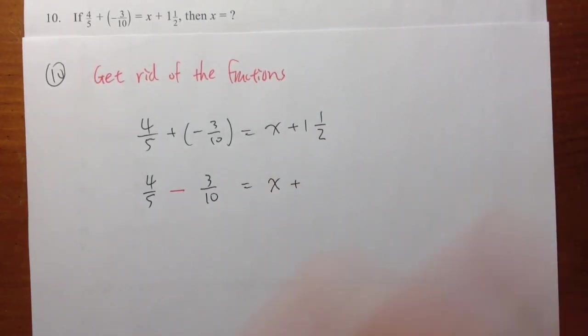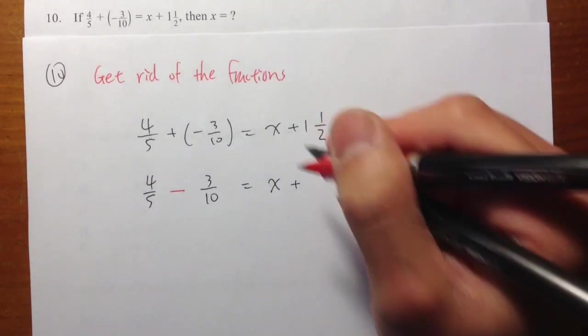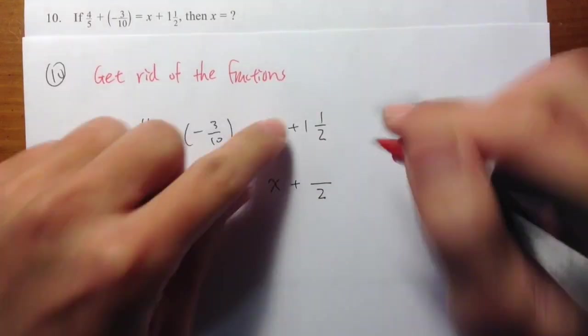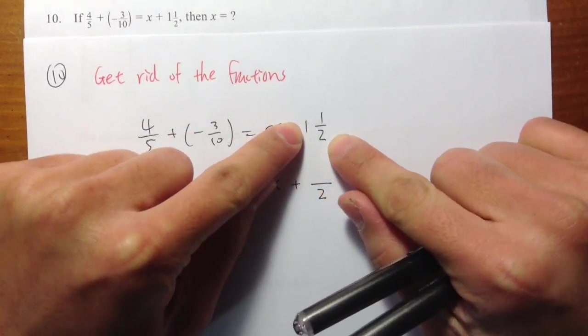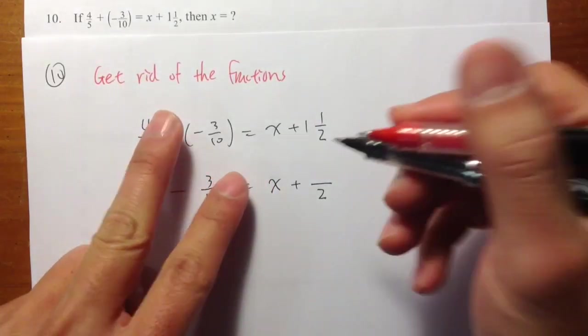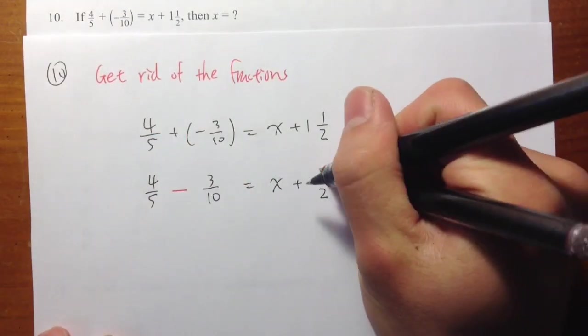So you barely see mixed numbers in algebra, alright? So the way to do this is, again, fractions, the denominator will be the same. Okay? You take the 1 multiplied by the 2, which is 2. And then you add 1 on the top, which is the total of 3.